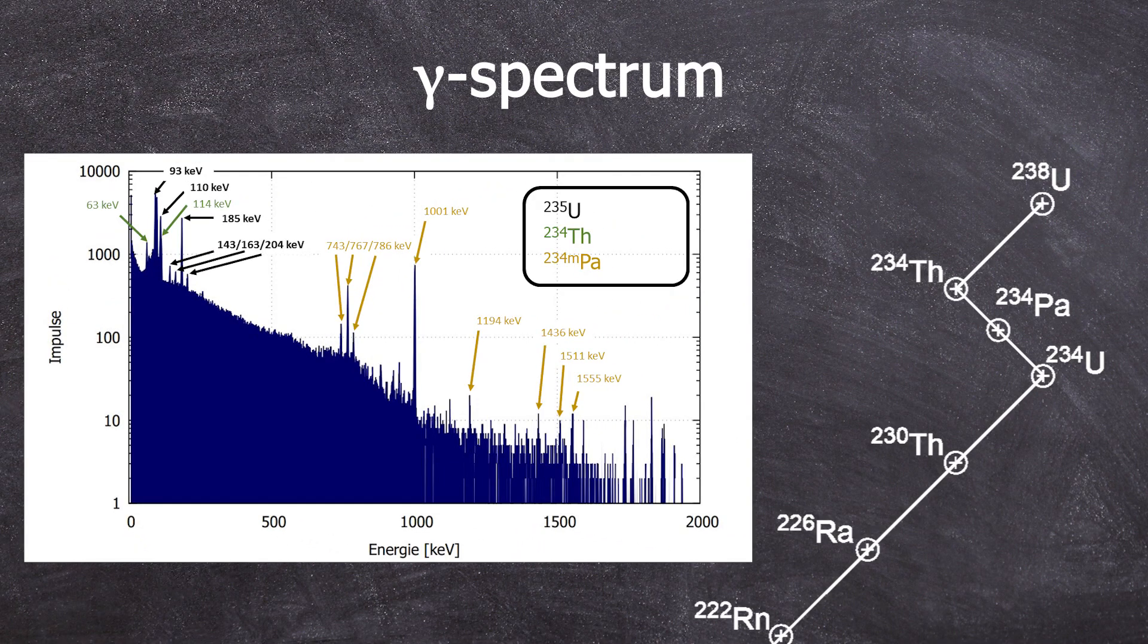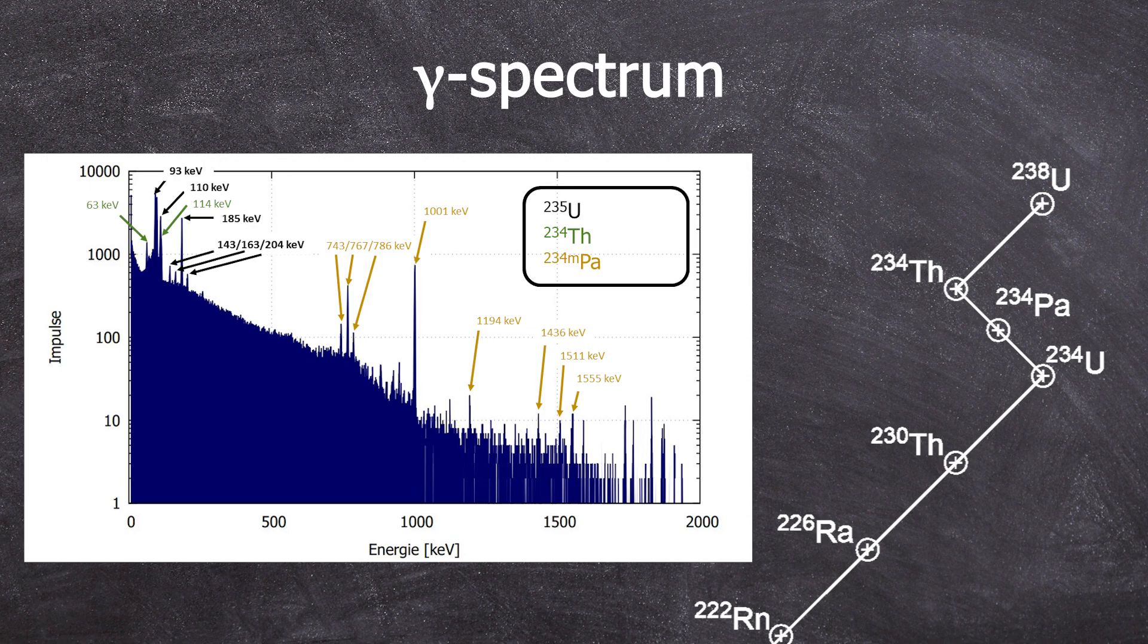However, you can see the daughter nuclei, thorium-234. And you can also see its daughter nuclei, protactinium-234-M. Then it decays into uranium-234, which you don't see in the gamma spectrum. Further decay products are not visible due to the relatively recent chemical processing for the production of these pellets. The decay products haven't had time to form.